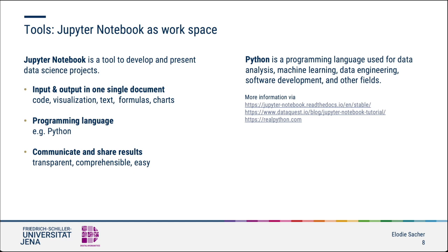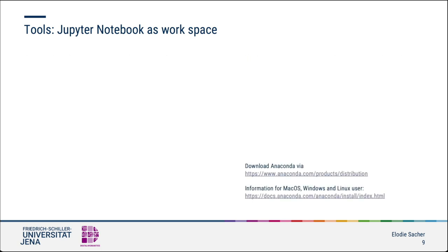Jupyter Notebook is part of your data science workflow. It also helps you communicate and share your results in a transparent, understandable and appropriate way. To effectively perform API queries, the URLs are part of a set of commands expressed through Python. Python is a general purpose programming language applied in data science, data analysis, machine learning, data engineering, web development and other fields. The commands written in Python to query data from the V&A API are listed in the V&A API guide and can be used in Jupyter Notebook. Only the API strings, your research question in the form of a URL and some variables within the Python code need to be customized.